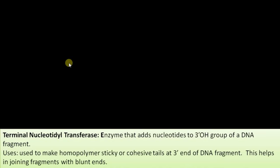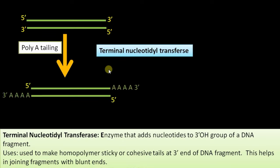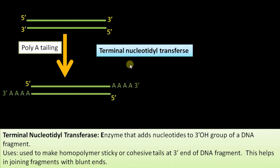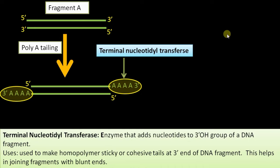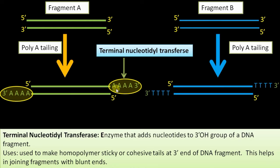Terminal nucleotidyl transferase is an enzyme that adds nucleotides to the 3' OH group of a DNA fragment — used in homopolymer tailing to make blunt ends sticky, helping in joining fragments with blunt ends. It is also used in radio-labeling. For example, if fragment A and fragment B both have blunt ends and are difficult to join, we add a poly-A tail to one end and a poly-T tail to the other using terminal nucleotidyl transferase. Both fragments now have complementary overhangs that anneal easily.